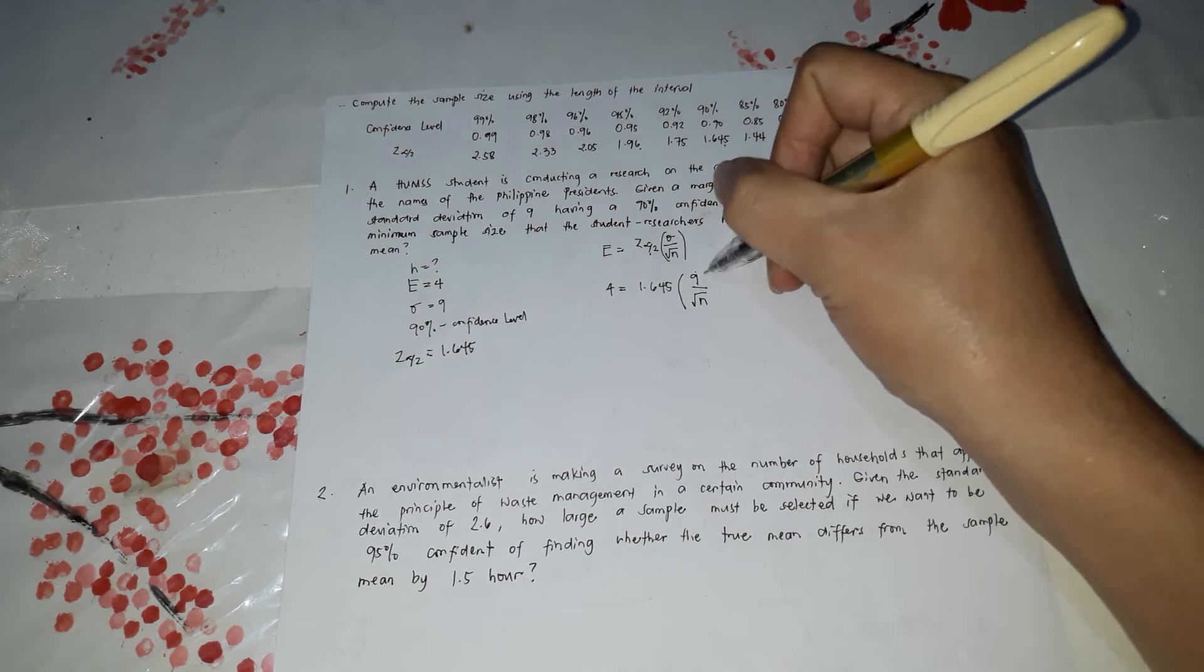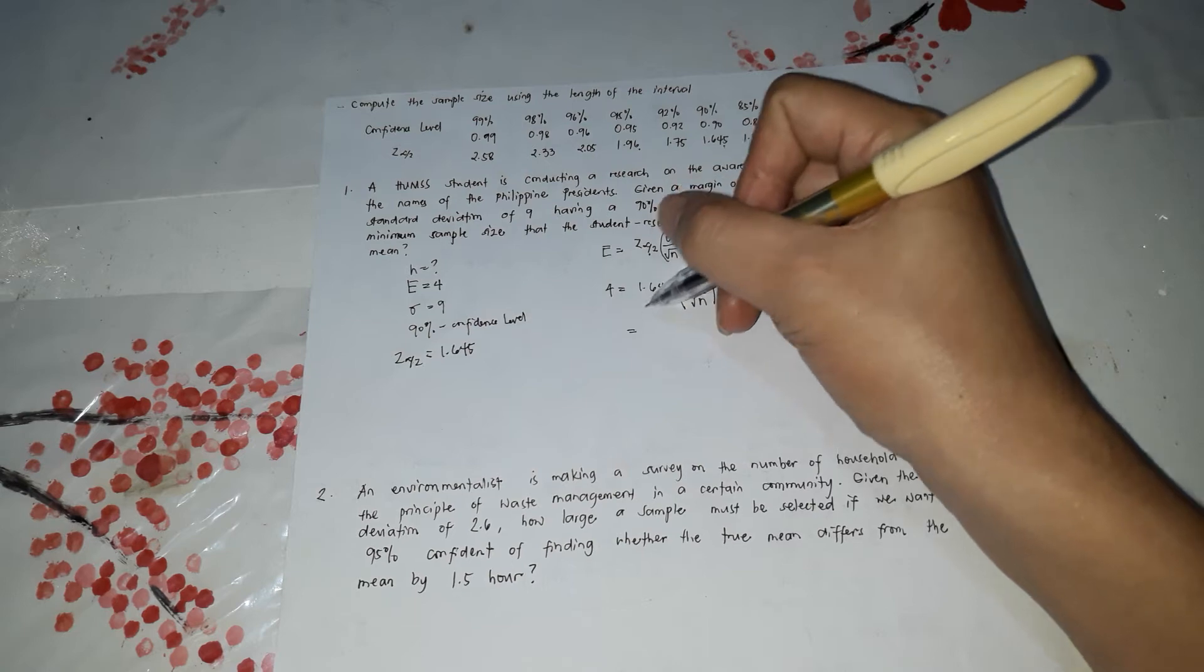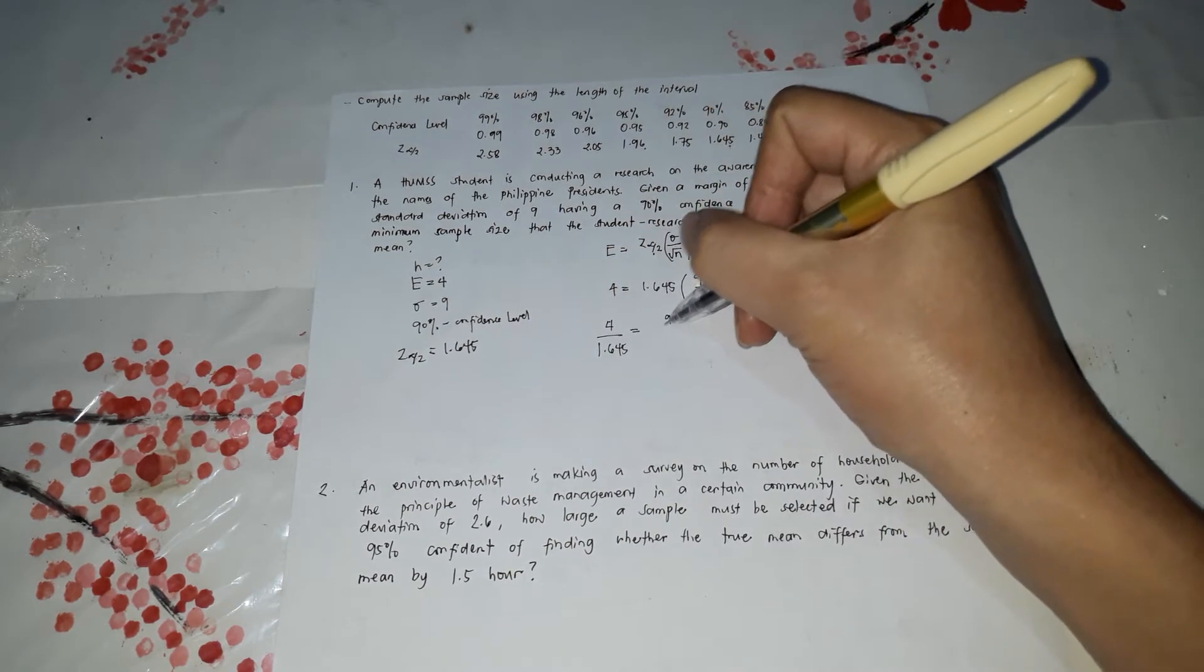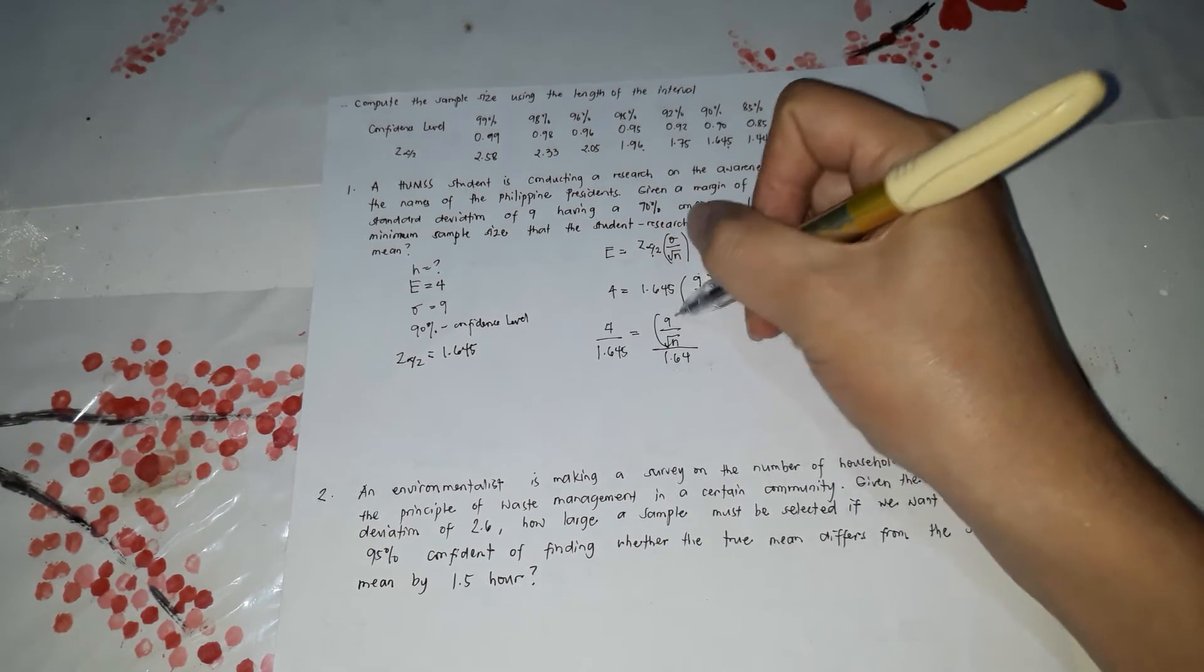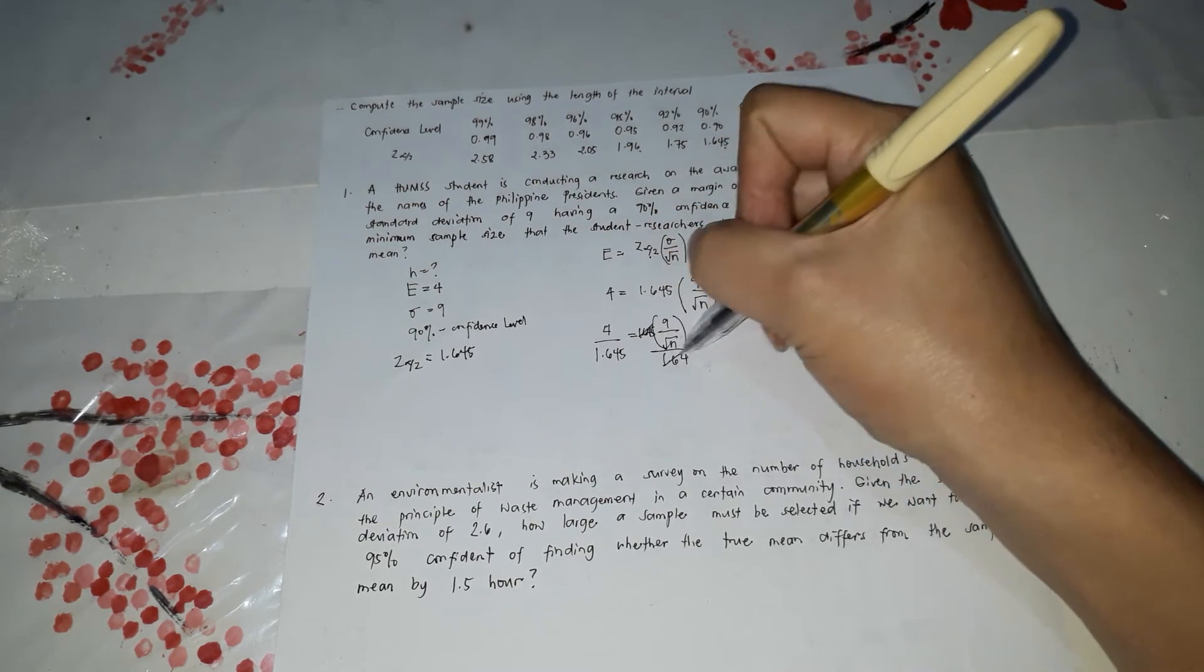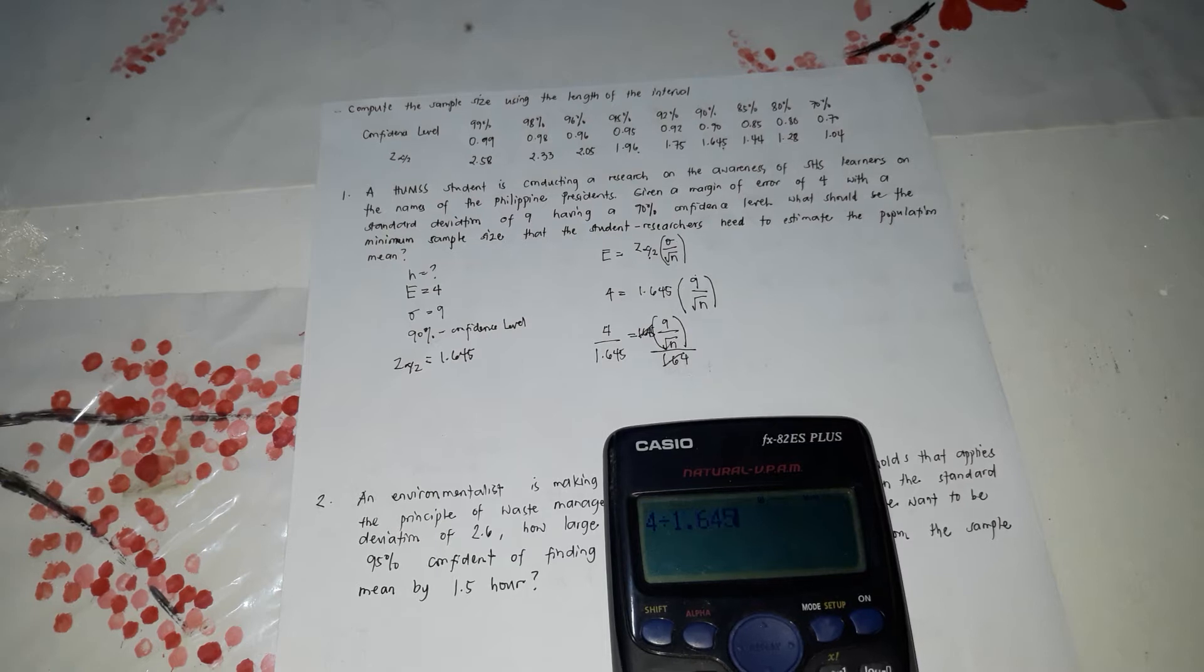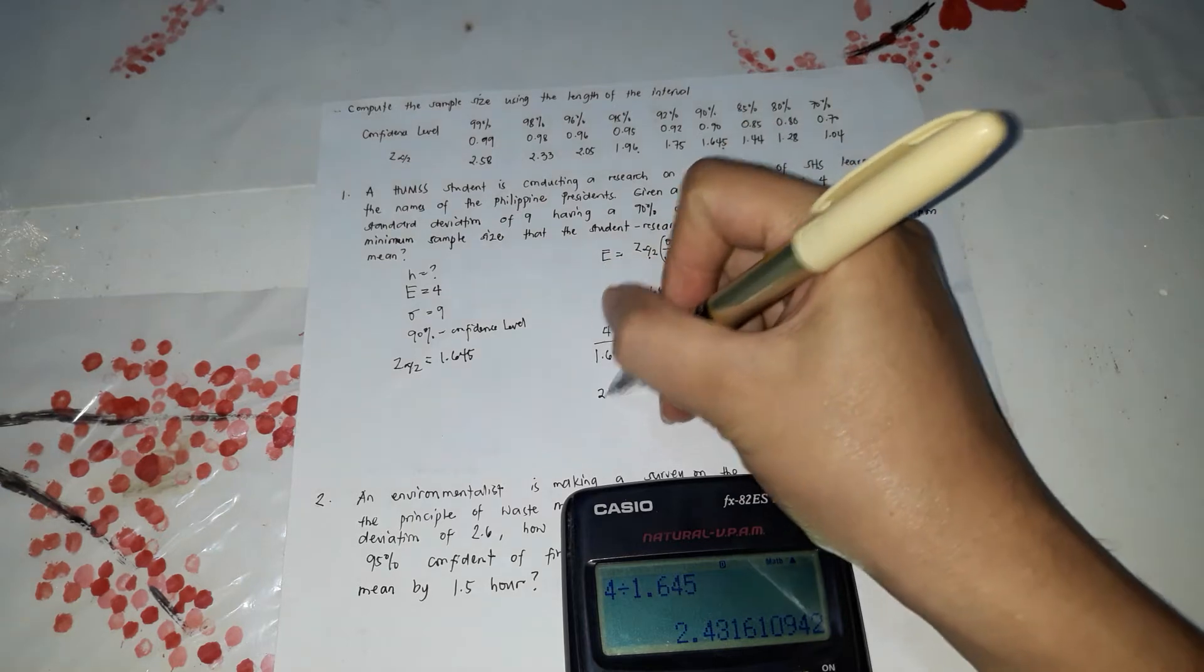So what we're going to do is divide both sides by 1.645. So 9 square root of N divided by 1.645. Cancel that. So what's left is this one. So 4 divided by 1.645, that's 2.432.